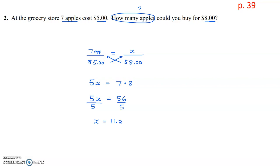Well, we know that we're not going to be buying 11.2 apples. So when we make our answer for this question, we will say, I could buy 11 apples for $8. So we're going to be rounding down because we don't have enough to get 12 with that amount of money.